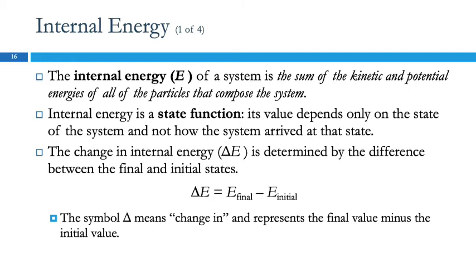Talking about energy, we can discuss the internal energy of a system — this is the total of kinetic and potential energy that the particles in that system have. The system is whatever we define it to be. The total of all that kinetic and potential energy is called the internal energy, or just E. This internal energy is a state function, so its value only depends on where it is now, not how it got there. To find the change in internal energy, we look at the final energy minus the initial energy, just like with elevation — it doesn't matter how the change occurred.